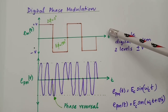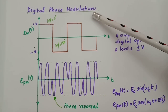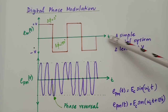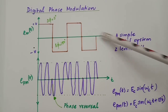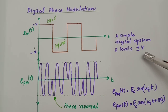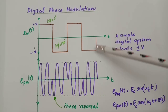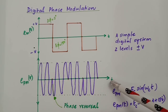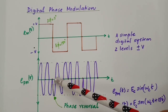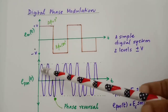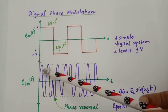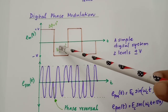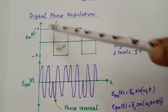Corresponding to sinusoidal phase modulation, if the input signal is a digital signal, we call it digital phase modulation. Here we consider a simple digital signal with just two levels: at any time it is either +V volts or −V volts, like a square wave — a two-level digital system. The carrier is a signal of particular frequency and amplitude, and the phase modulated wave produced has only two amplitude values in the modulating signal, unlike the earlier sinusoidal case.